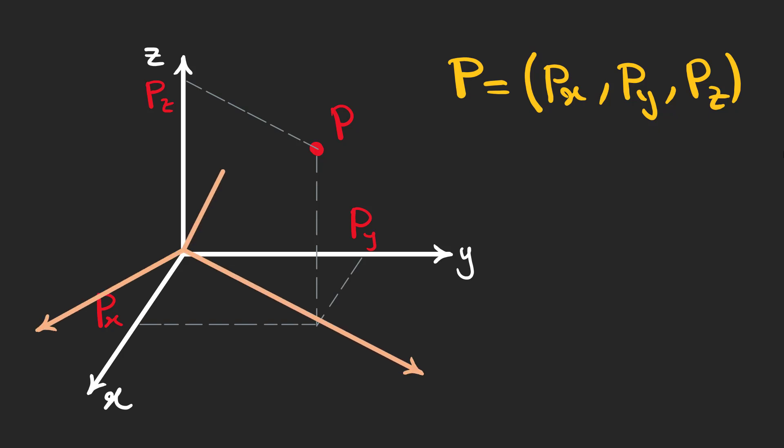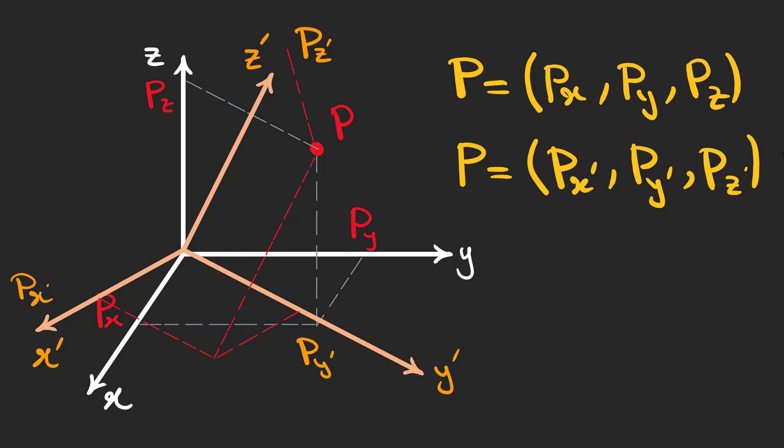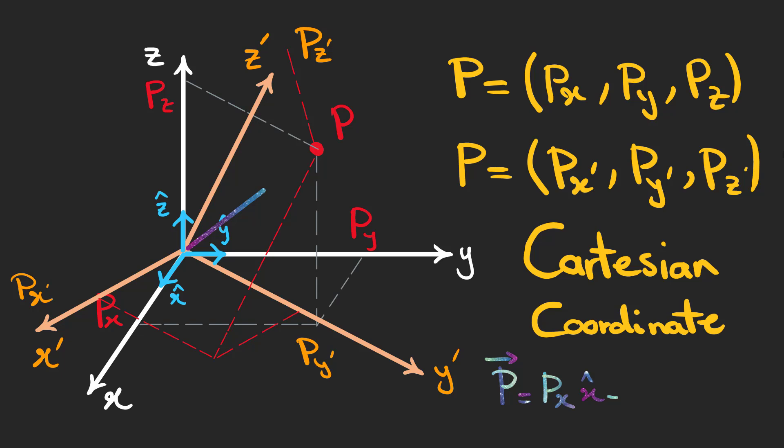This is not the only coordinate we can use and we can choose a different coordinate called x prime, y prime, and z prime. These are the point's components on the new frame and three other numbers can be used to show the point in the new coordinates. In this coordinate, we can define three unit vectors along each axis and write any vector based on these unit vectors.